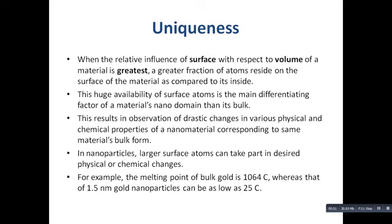An example: the melting point of bulk gold is 1064°C, which is quite high. But 1.5 nanometer diameter gold nanoparticles can have a melting point as low as 25°C. This is because in 1.5 nm gold nanoparticles, a large fraction of atoms are on the surface, and when heat is supplied, those surface atoms acquire larger kinetic energy, enabling melting at a much lower temperature.